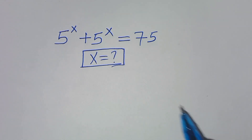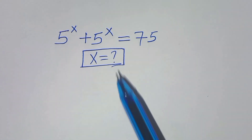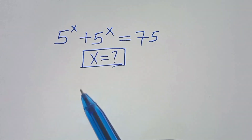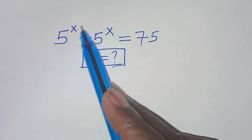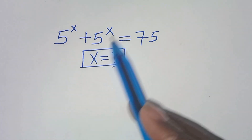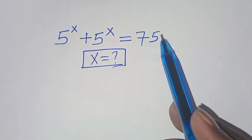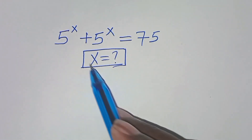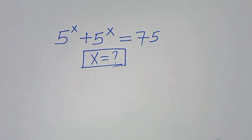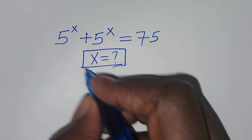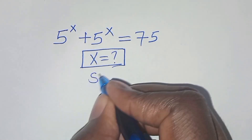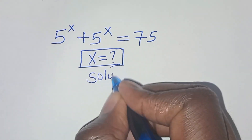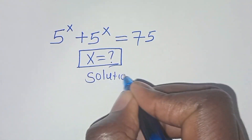You are welcome to solve this nice exponential equation: 5 to the power x plus 5 to the power x equals 75. What is the value of x? Let's work through the solution from here.